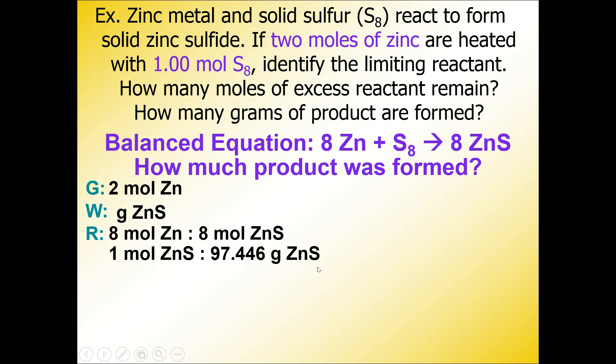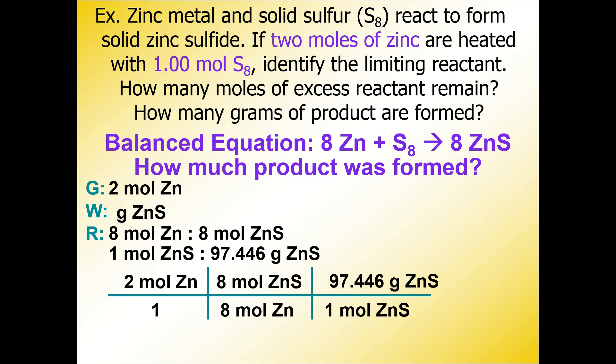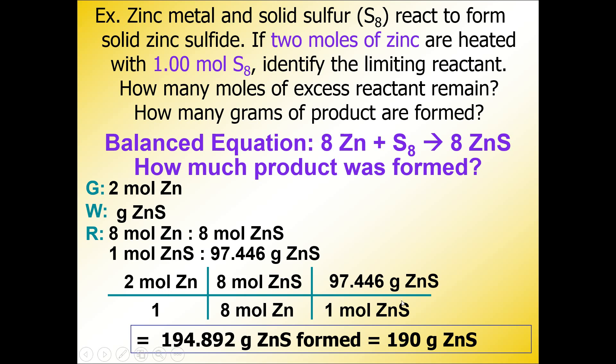Now we can place our numbers in our dimensional analysis problem, always making sure our units cancel out diagonally. See how we have moles of zinc and moles of zinc, and moles of zinc sulfide, moles of zinc sulfide, grams of zinc sulfide. When we type this into the calculator, we can type in 2 times 8 times 97.446 divided by 8. The calculator value is 194.892, but the answer rounded to two sig figs is 190 grams.